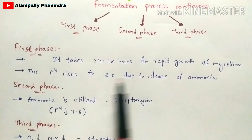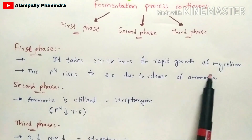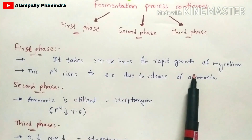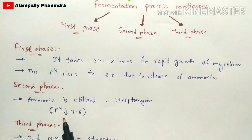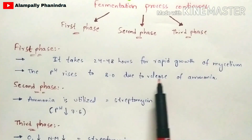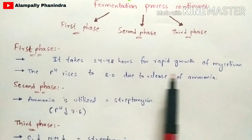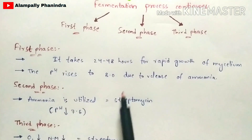In the second phase, the ammonia released during the first phase is utilized again by the mycelium itself. As the ammonia is utilized, its quantity decreases, causing the pH to fall down to 7.6. So when ammonia is high, pH is high; as ammonia is consumed, pH decreases, which leads to the production of streptomycin.